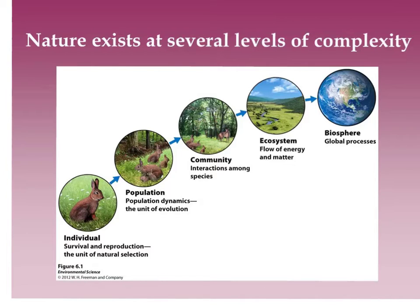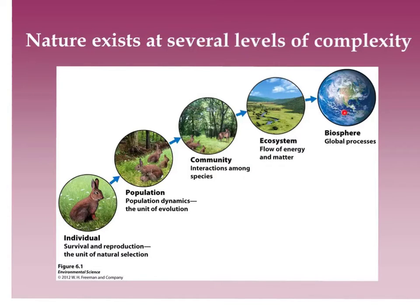A community could consist of the rabbit population, the white-tailed deer population, the sugar maple tree population, and so on. If you then take into account the abiotic components in that defined area, along with all of the biotic factors, or the communities, then you have an ecosystem. And of course, all of the ecosystems in the world make up the biosphere.